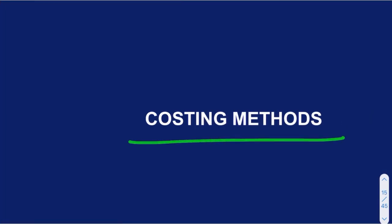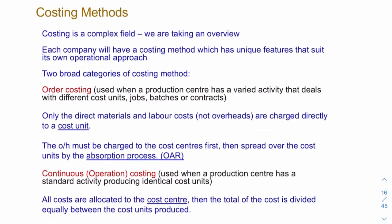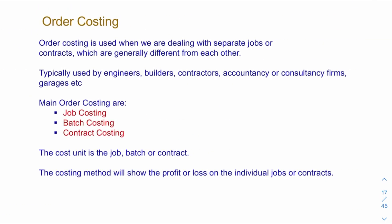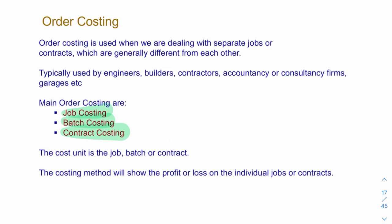Now let's look at costing methods. I want to distinguish between order costing and continuous costing. For order costing, we deal with separate jobs or contracts — you'll come across the terms job costing, batch costing, and contract costing. We assign a cost for an entire job, batch, or contract, and when we talk about profit or loss, we're talking about the whole contract.